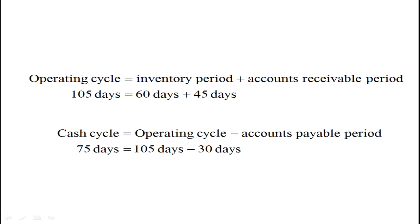The operating cycle is that entire 105-day period. The inventory period was 60 days — from the day you purchased the inventory to the day you sold it. You purchased it, didn't have to pay for 30 days, and it took another 30 days to sell it. The accounts receivable period is the time from the sale until you get paid, which was 45 days. The cash cycle is the operating cycle (105 days) minus the accounts payable period (30 days), so the cash cycle is 75 days.